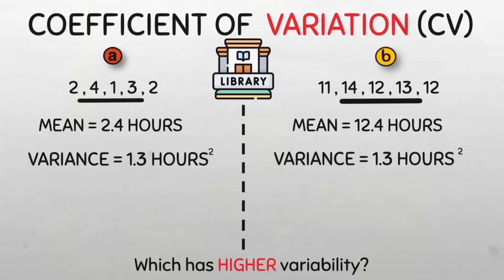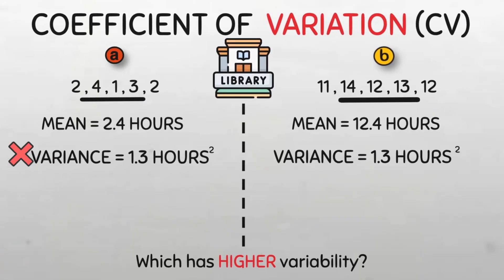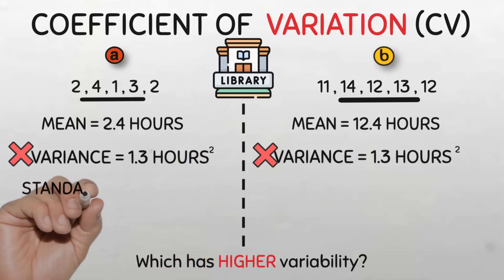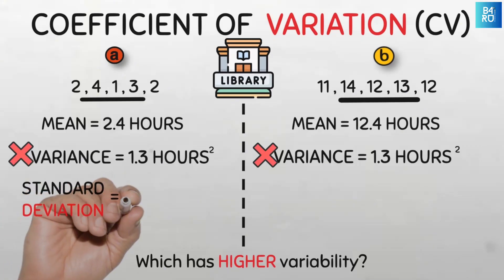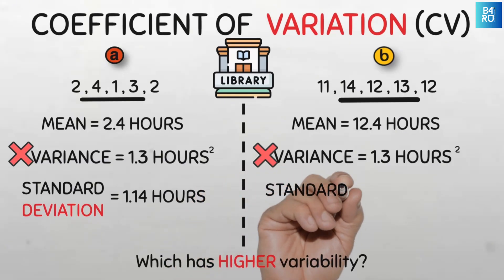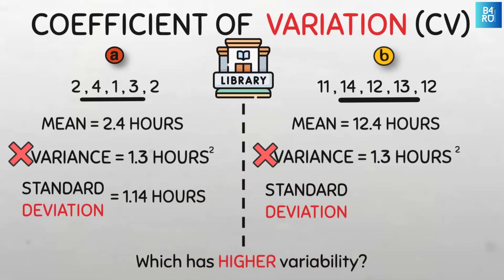So variance is not a good measure to compare variability between two data sets. How about we try another common measure of variation — the standard deviation? Unfortunately, after computing the standard deviation, both data sets have the same standard deviation, which is 1.14 hours. After all, standard deviation is simply just the square root of the variance. The standard deviation measures the typical deviation of each data point from the mean. So since it's the same for both, this means the absolute variability of both data sets is the same.